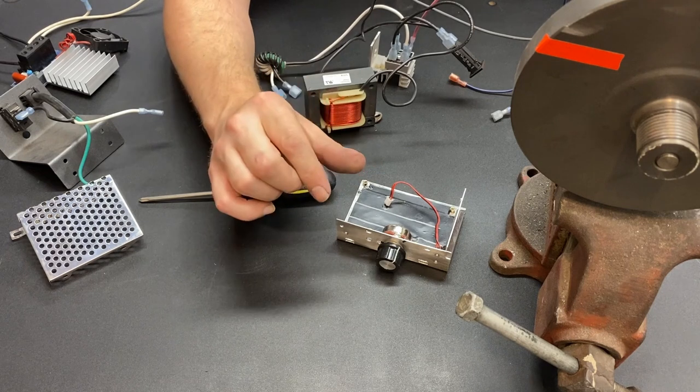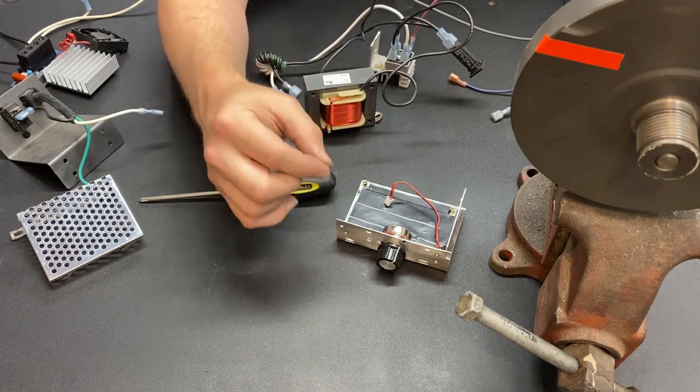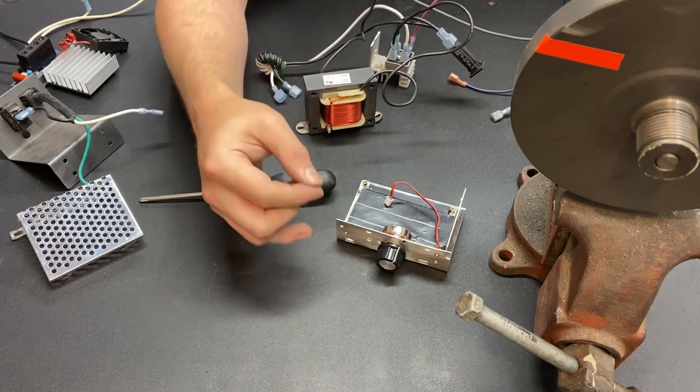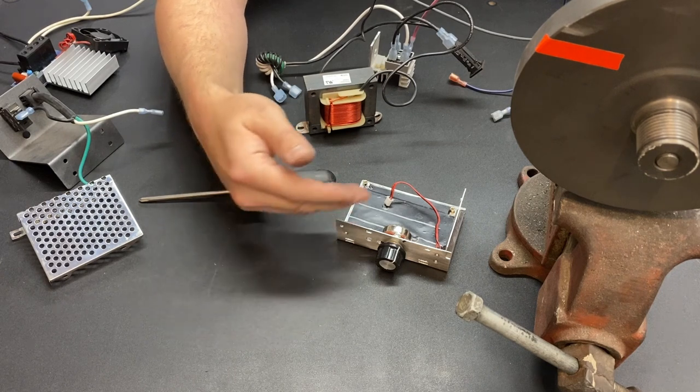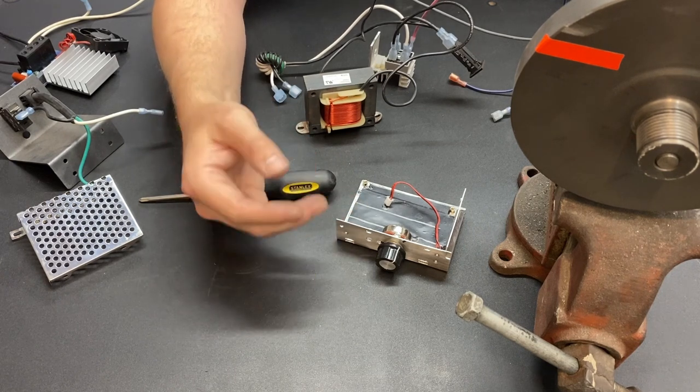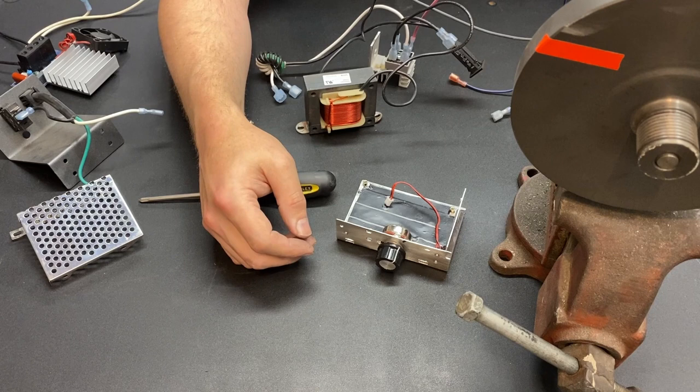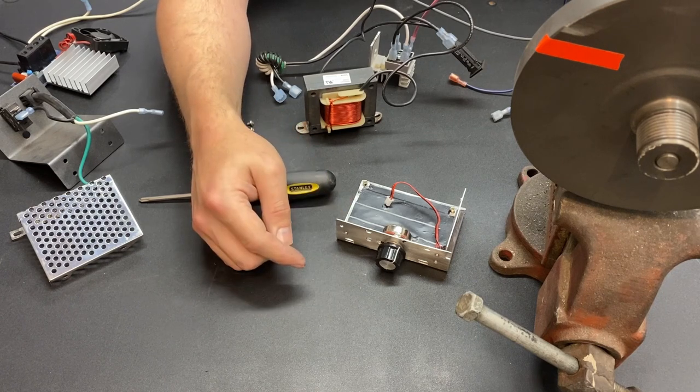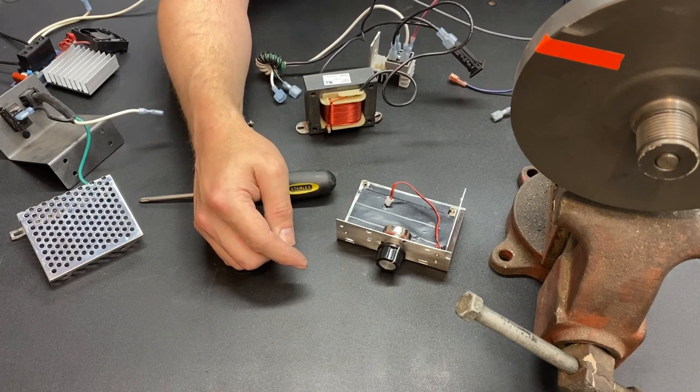That same one quarter turn is a much smaller change on the smaller potentiometer. And by doing it that way, we get the ability to really dial in our speeds. This is how I have it set up on both my mill and my lathe.